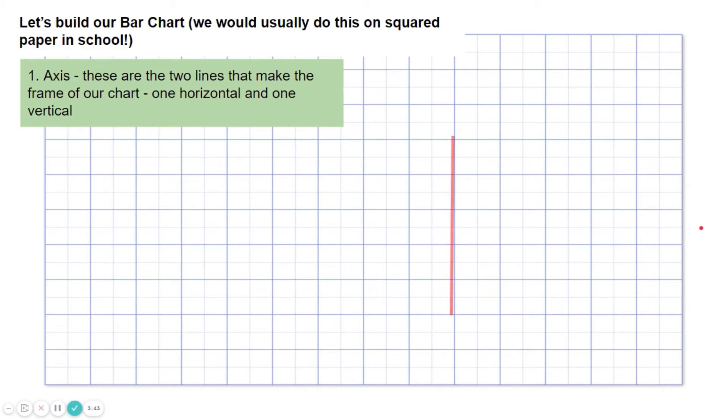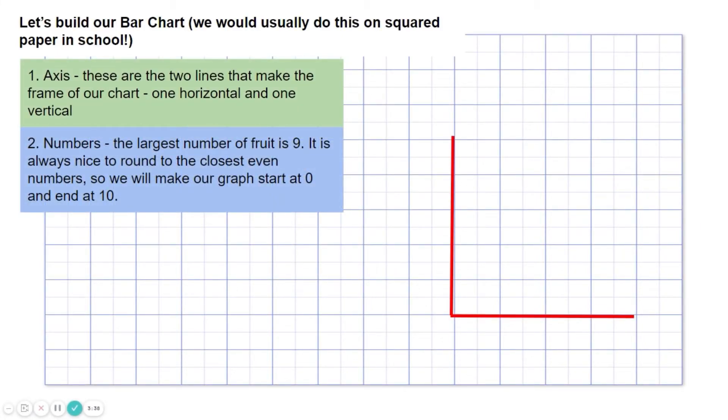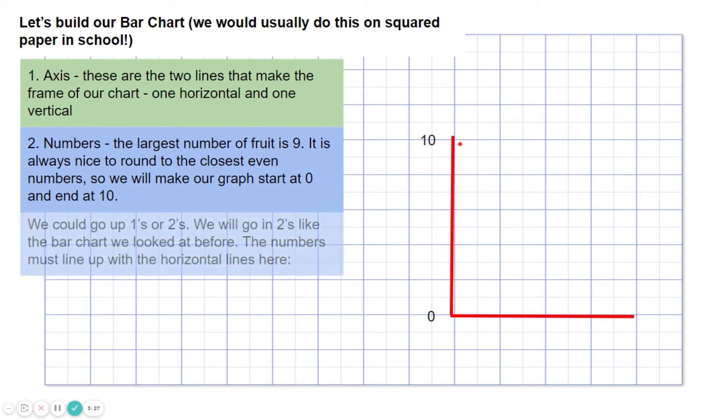Let's build our bar chart. We would usually do this on squared paper. Number one is the axis. These are the two lines, vertical and horizontal, that make the frame of our chart. Next up is numbers. The largest number of fruit is nine. It is always nice to round to the closest even numbers. So we will make our graph start at zero and end at ten, here, at the top. We could go up in ones or twos. We'll go up in twos like the bar chart we looked at before. The numbers must line up with the horizontal lines here. So two and again here, four, six and eight. So we're exactly on the lines.